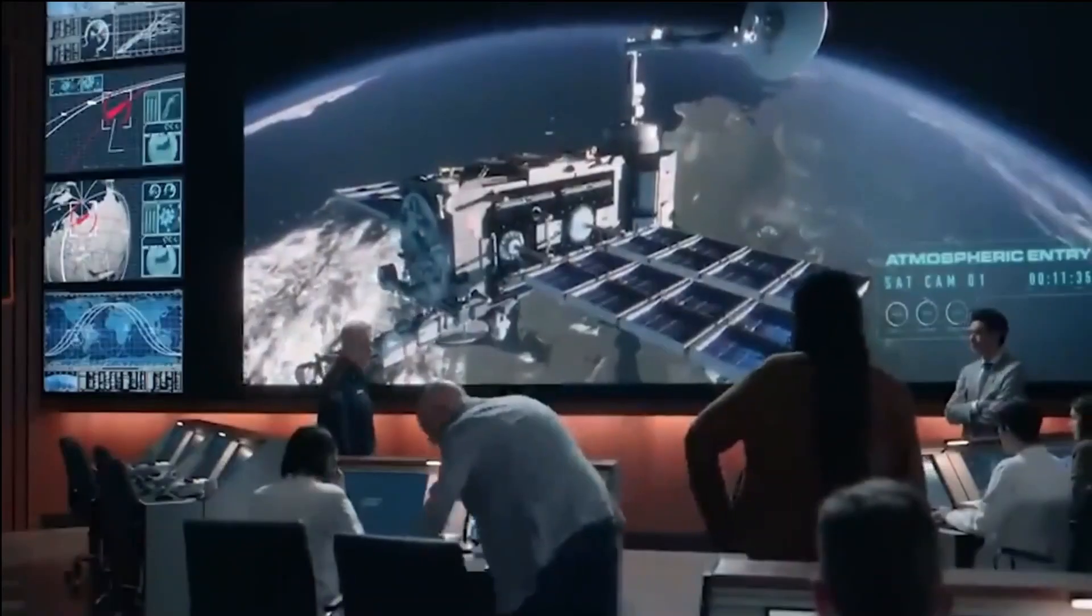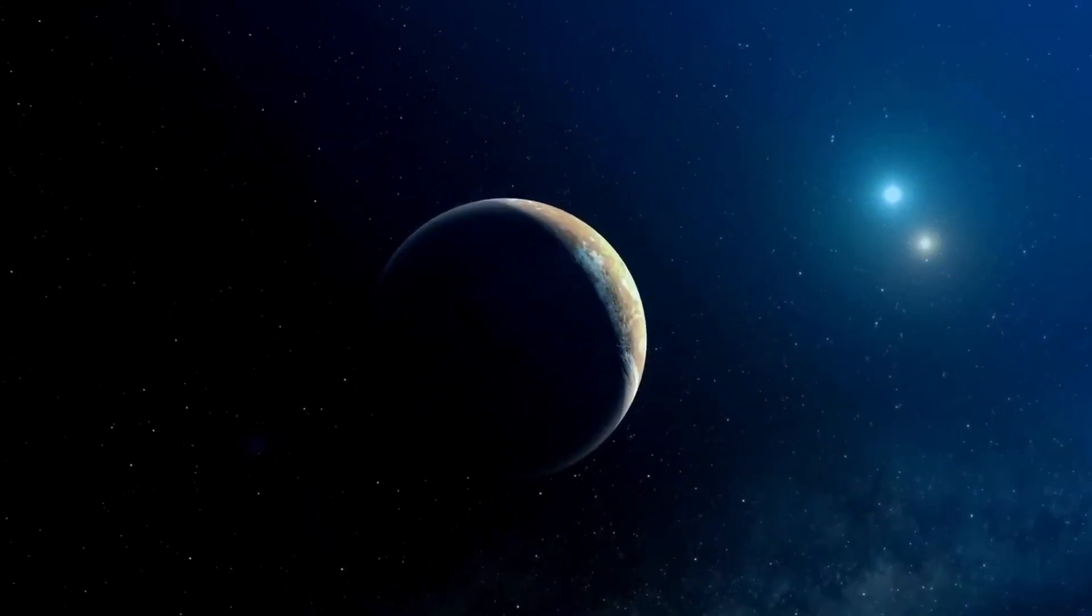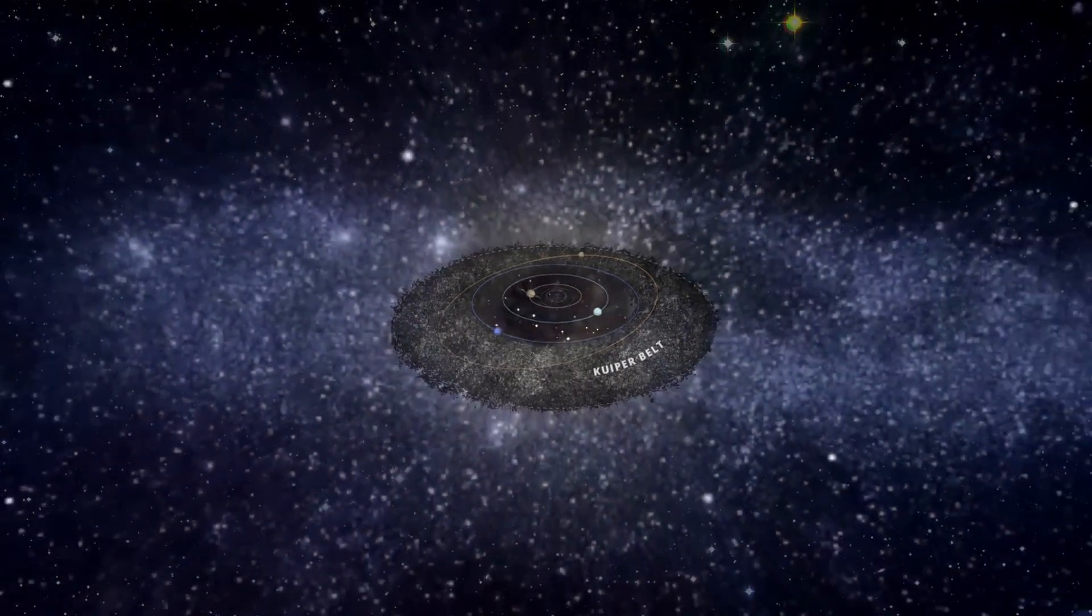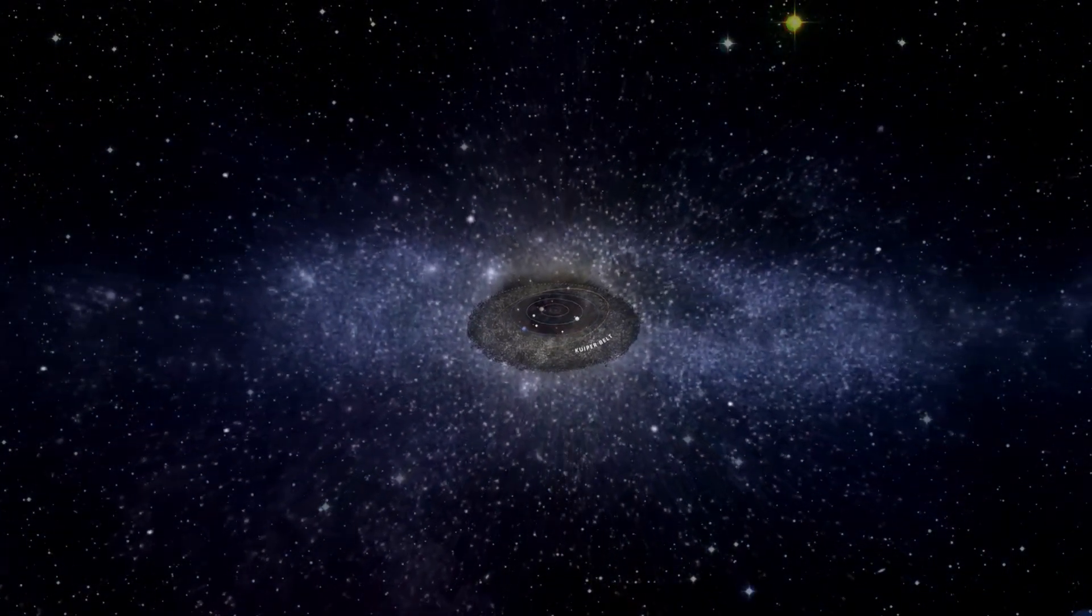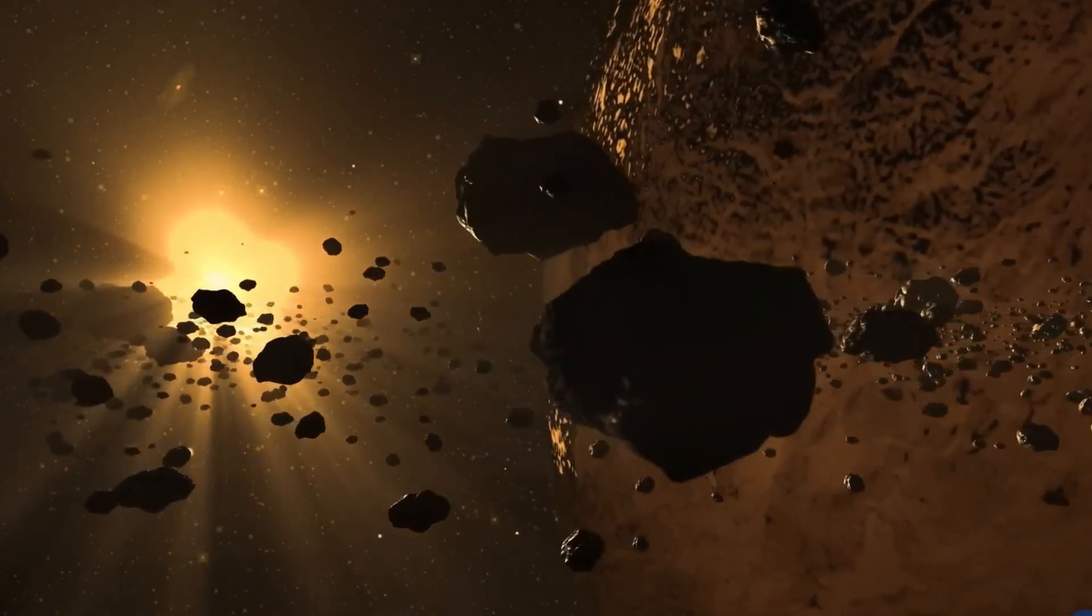However, for these two renowned scientists, they believe that rather than searching for Planet 9 all over the solar system, we could use that energy to explore the Kuiper Belt, a circumstellar disk in the outer solar system that is believed to house at least one Earth-like planet.